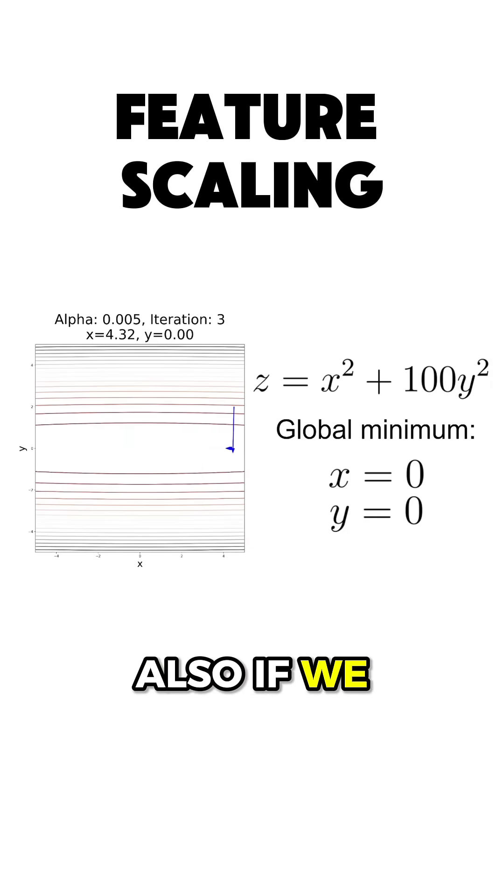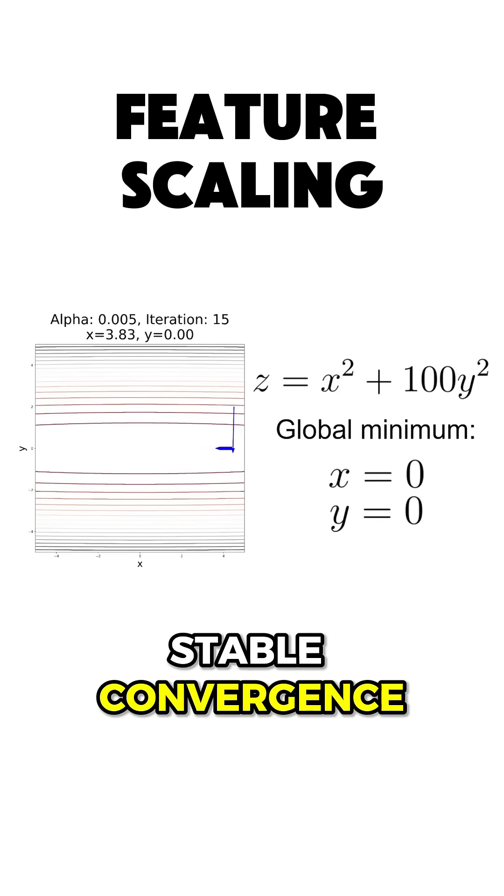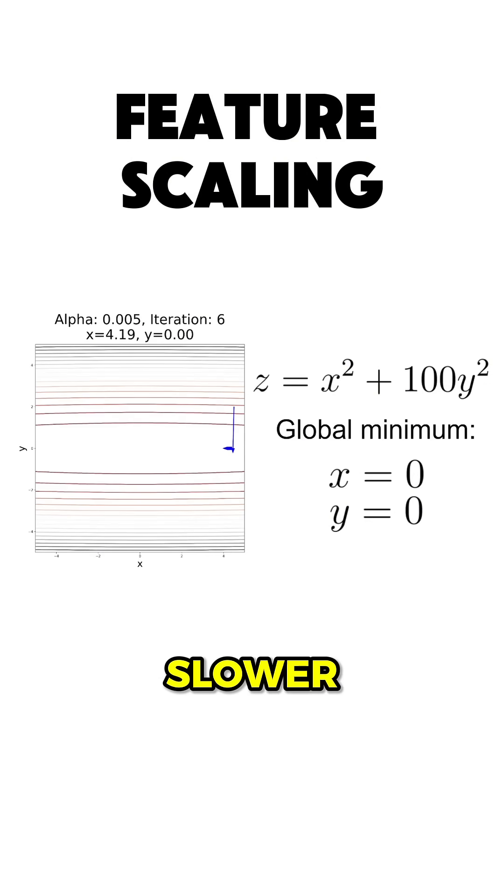Also, if we increase the coefficient of y, then we have to decrease the learning rate alpha even more to have a stable convergence, which in turn will make the convergence on the x-axis even slower.